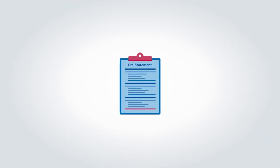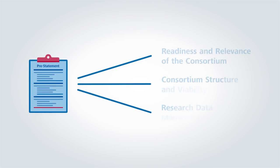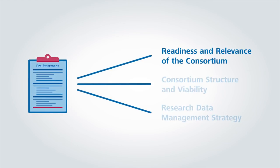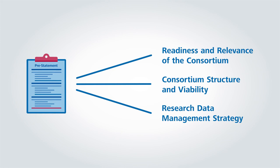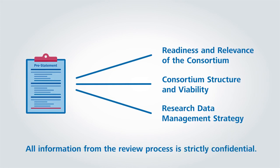Please send us your written pre-statements prior to the review. When preparing your statements, please structure them according to the main funding criteria: readiness and relevance of the consortium, consortium structure and viability, and research data management strategy. The statements will help us in preparing the second and third parts of the review. Please be aware that all information from the review process is strictly confidential.